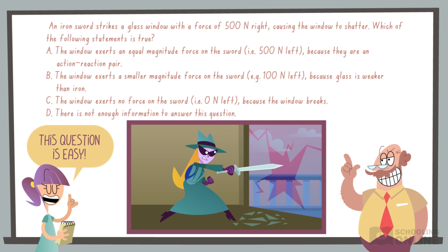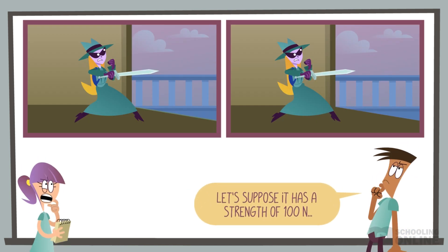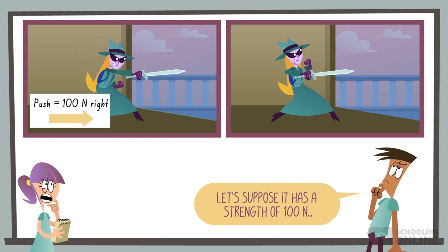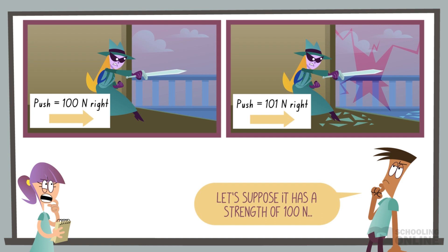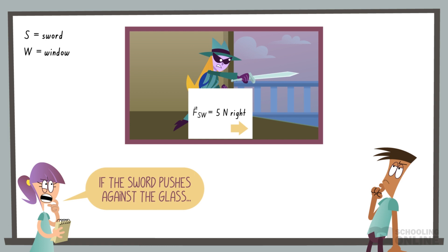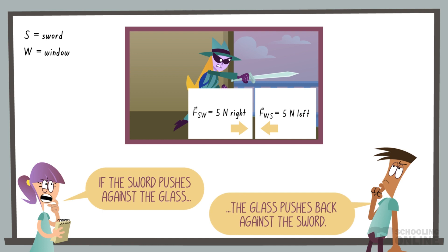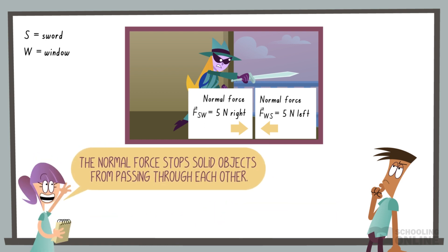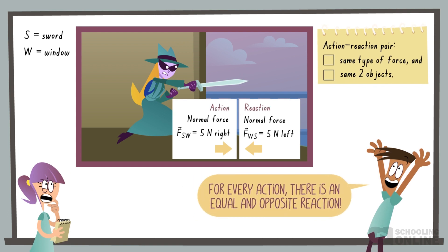The answer might seem obvious, but let's approach it in a roundabout way. Suppose the glass has a strength of 100 newtons, meaning it can withstand any applied force less than or equal to 100 newtons. Consider a simple scenario where the applied force is 5 newtons right — not enough to break the glass, so everything remains at rest in static equilibrium. That's because the window pushes back against the sword with a force of 5 newtons left. Furthermore, both of these are normal forces because the sword and window do not pass through each other. These forces form an action-reaction pair because they act between the same two objects and are the same type of force.